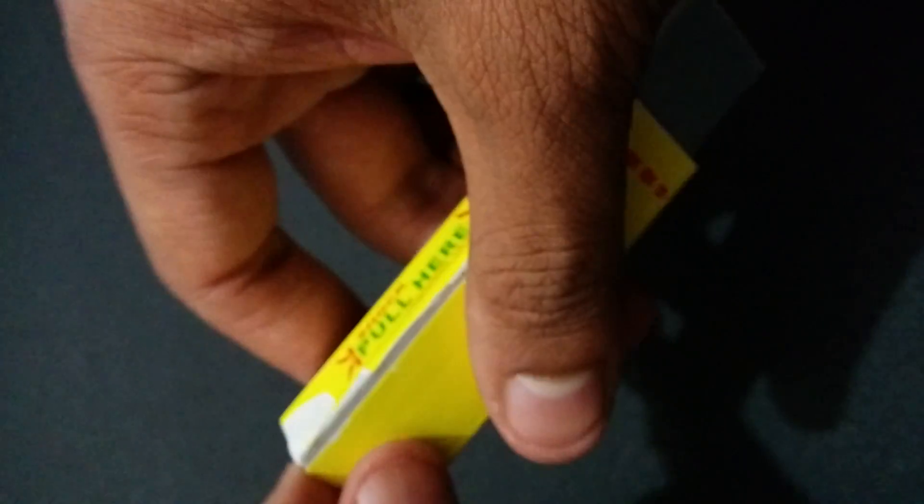This holds the circuit inside. So let's open this up. First we'll remove all these papers. May take some time because it is glued perfectly. So here you can see this is the main circuit.